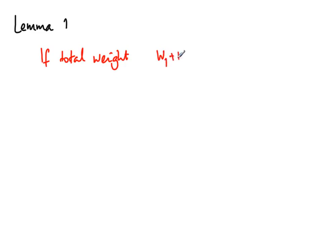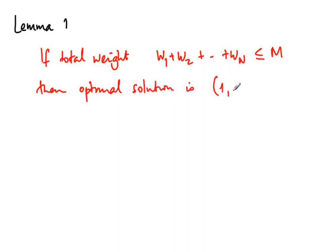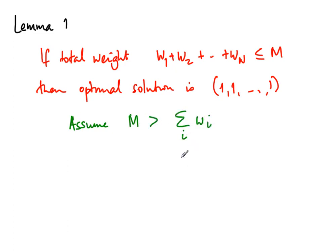Before examining a greedy strategy, let us note some obvious observations. Lemma 1: if the total weight W1 + W2 + ... + Wn is less than or equal to M, there is nothing to prove. The optimal solution sets all Xi to 1 — take everything — since there is no capacity problem. We therefore assume M is smaller than the total weight of all chemicals.